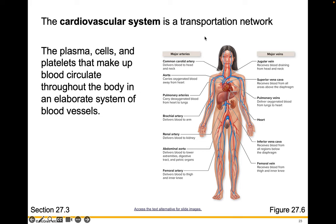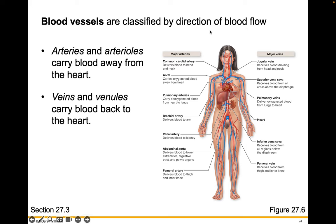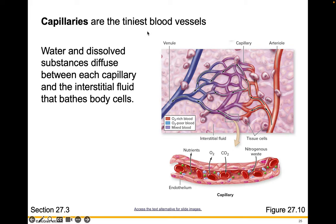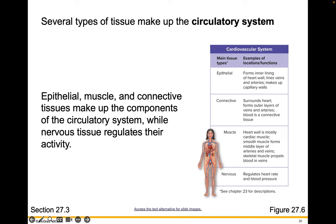The cardiovascular system is a transportation network. The plasma, cells, and platelets that make up the blood circulate throughout the body in an elaborate system of blood vessels. Blood vessels are characterized by the direction of blood flow: arteries and arterioles carry blood away from the heart, while veins and venules carry blood back to the heart. Capillaries are the tiniest blood vessels, where water and dissolved substances diffuse between the capillary and the interstitial fluid bathing body cells. Epithelial, muscle, and connective tissues make up components of the circulatory system, while nervous tissue regulates their activity.